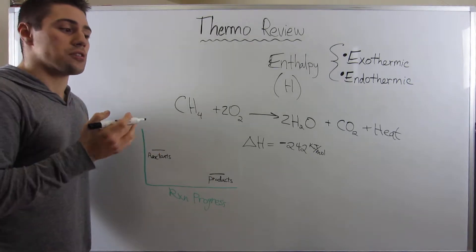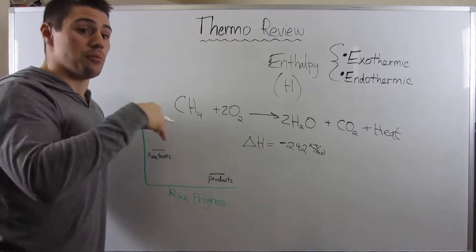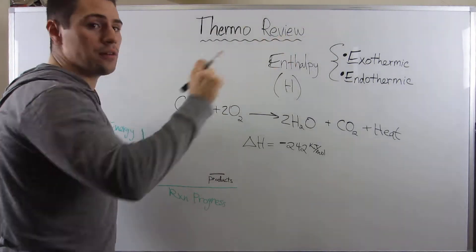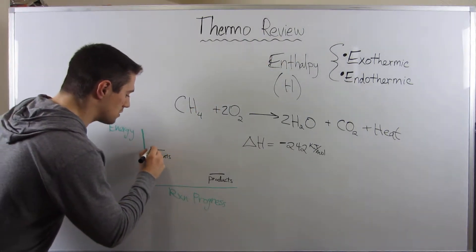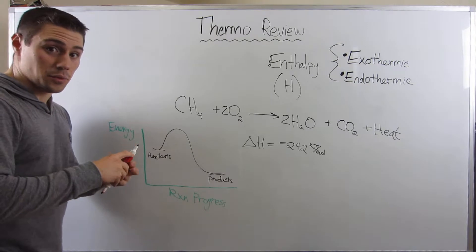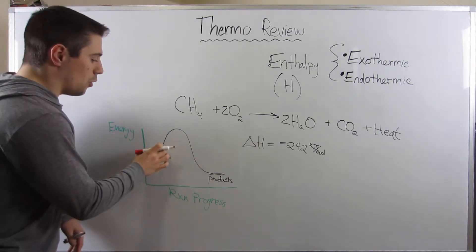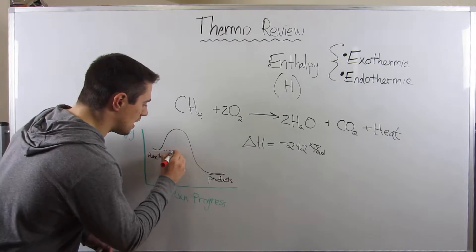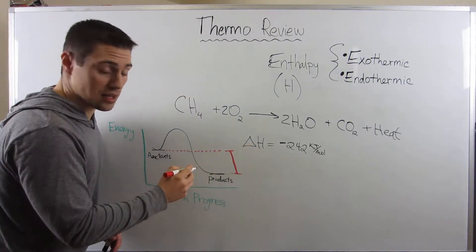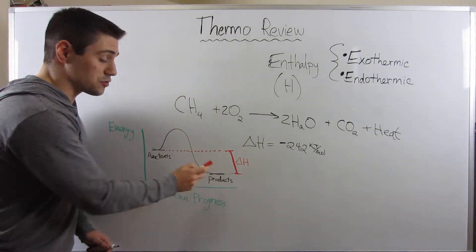Remember how every reaction, whether it's endo or exothermic, has an activation energy. There's always this little hump you have to get over to have a reaction go to completion. It always involves energy, so it's always a hump. And then whether you go up or down depends on whether you're exothermic or endothermic. Delta H's or enthalpies are always defined as where you're starting versus where you're ending.